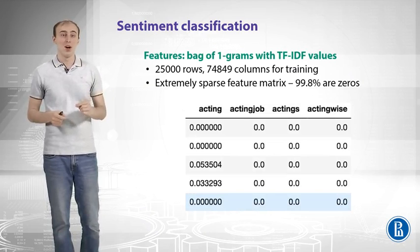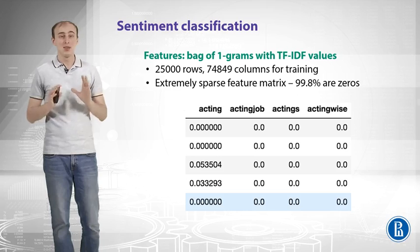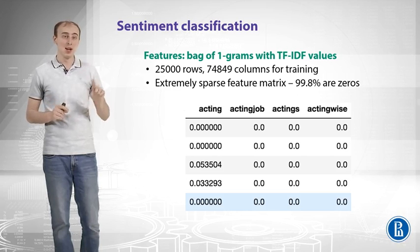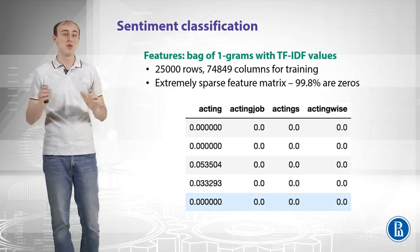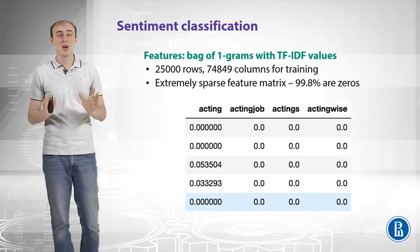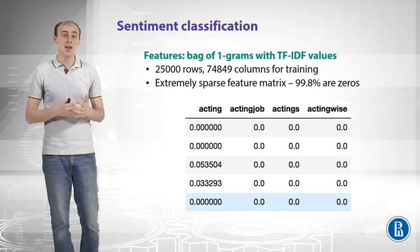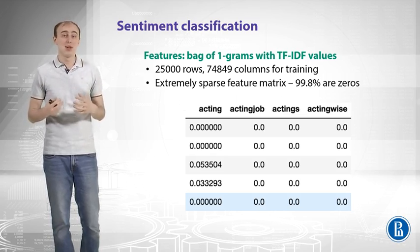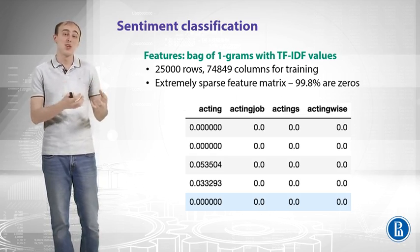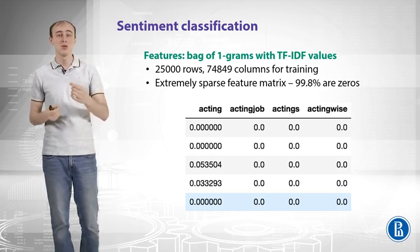Let's take features. We'll take a bag of 1-grams with TF-IDF values. As a result, we will have a feature matrix of 25,000 rows and 75,000 columns — a pretty huge feature matrix. What's more, it is extremely sparse: 99.8% of all values in that matrix are zeros.